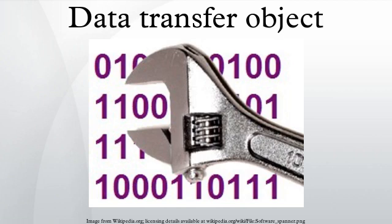A data transfer object is an object that carries data between processes. The motivation for its use has to do with the fact that communication between processes is usually done resorting to remote interfaces, where each call is an expensive operation. Because the majority of the cost of each call is related to the round-trip time between the client and the server, one way of reducing the number of calls is to use an object that aggregates the data that would have been transferred by the several calls, but that is served by one call only.